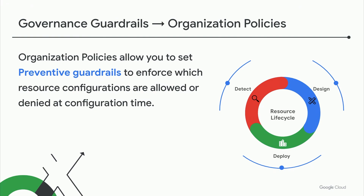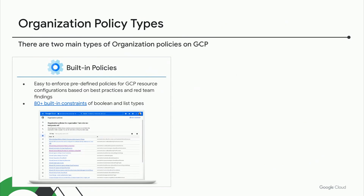Org policy covers the full lifecycle: from configuration design control, resource deployment, after checking policies, through resource violation and drift detection. There are essentially two types of org policies that GCP offers. First, GCP offers around 80 built-in predefined policies that we have identified based on industry best practices as well as red team findings, and we have already codified these so they are ready to go.